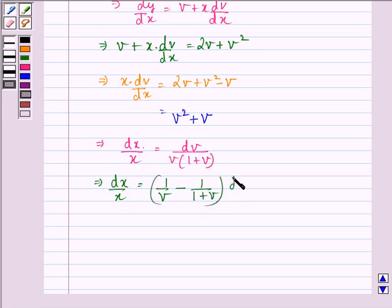Now integrating both the sides, we get ∫(dx/x) = ∫(1/v - 1/(1+v))dv.